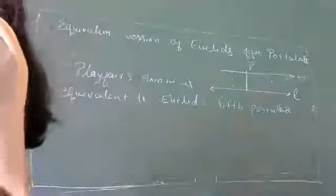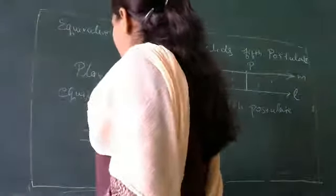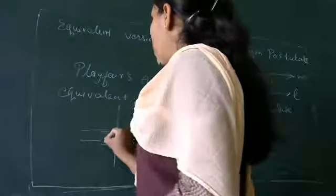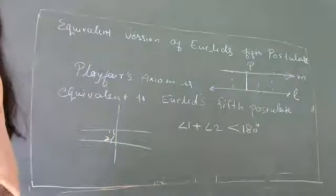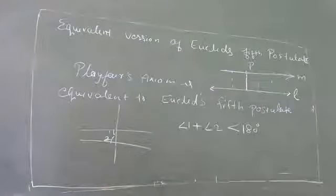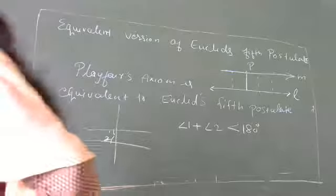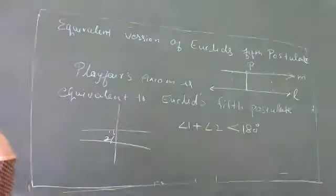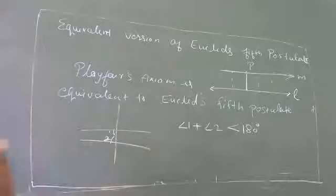You can rewrite the fifth postulate in your own easy words: when two lines are cut by a third line such that the sum of interior angles on one side — angle one plus angle two — is less than two right angles, they will intersect on that side. That is the easier restatement of Euclid's fifth postulate.